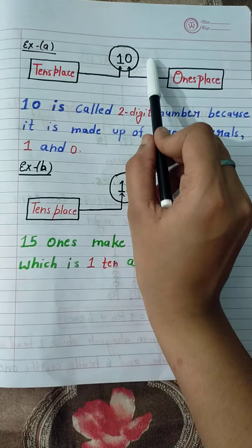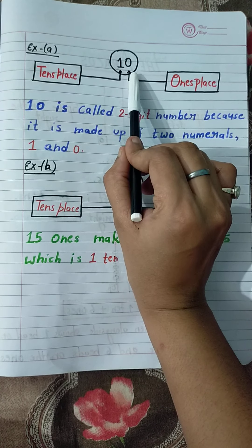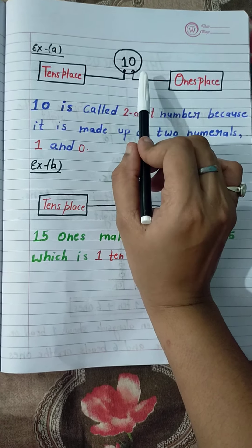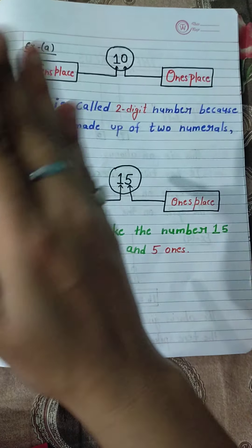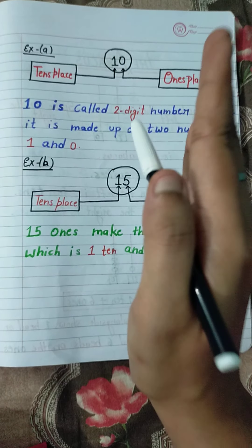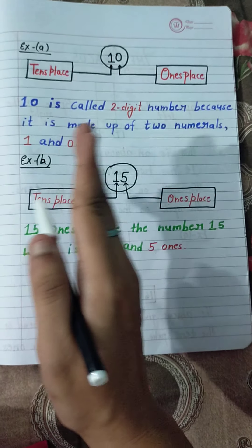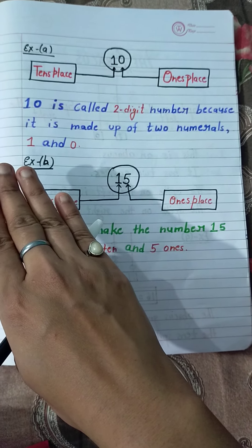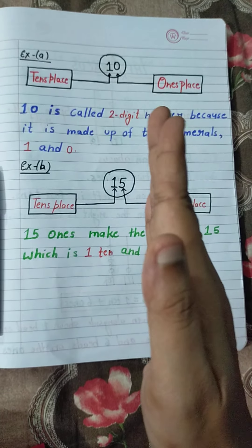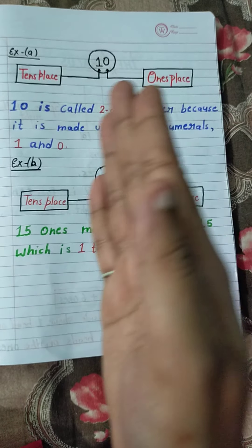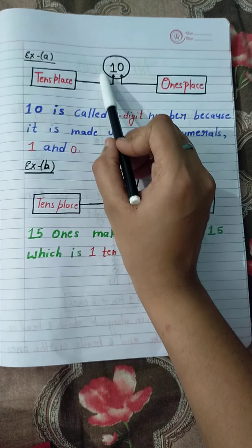Now, students, look at this example — this is 10. How do you know which side is the right side and which is the left side? Your right hand is your right side and your left hand is your left side. So this is 10.